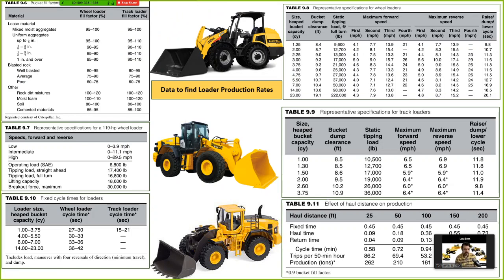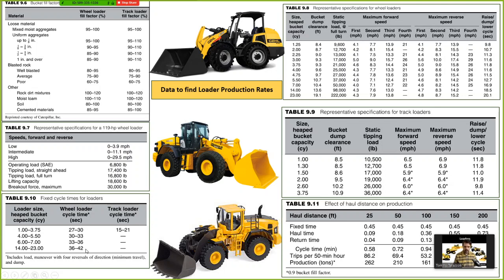In this chapter, for finding production we need to use a few tables, all provided in the slides. One table covers the fill factor — what percentage of the bucket can be filled — which depends on the type of material and size of aggregates. We also have speeds and specifications for specific loaders. Fixed cycle times are given based on loader size, and a range of cycle time is provided, ranging between 27 to 42 seconds for a single cycle.